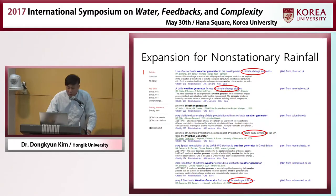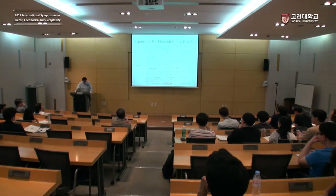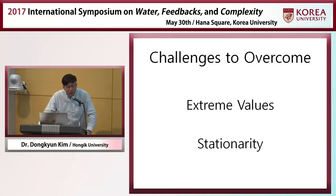Also, climate change assumes non-stationarity of the rainfall time series. But for the Poisson cluster rainfall model, we use one single set of statistics, which is stationary. So we need to modify the model to address this. The challenges to overcome in this field are: first, modify the model so it can generate extreme values well; and second, resolve the matter of non-stationarity.